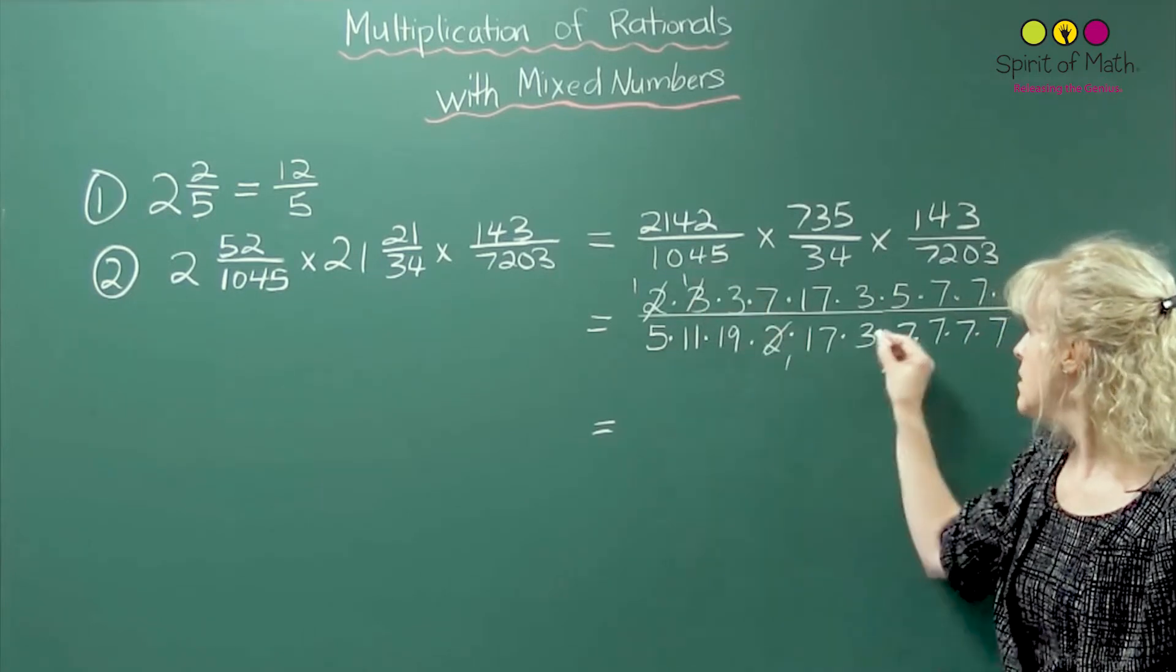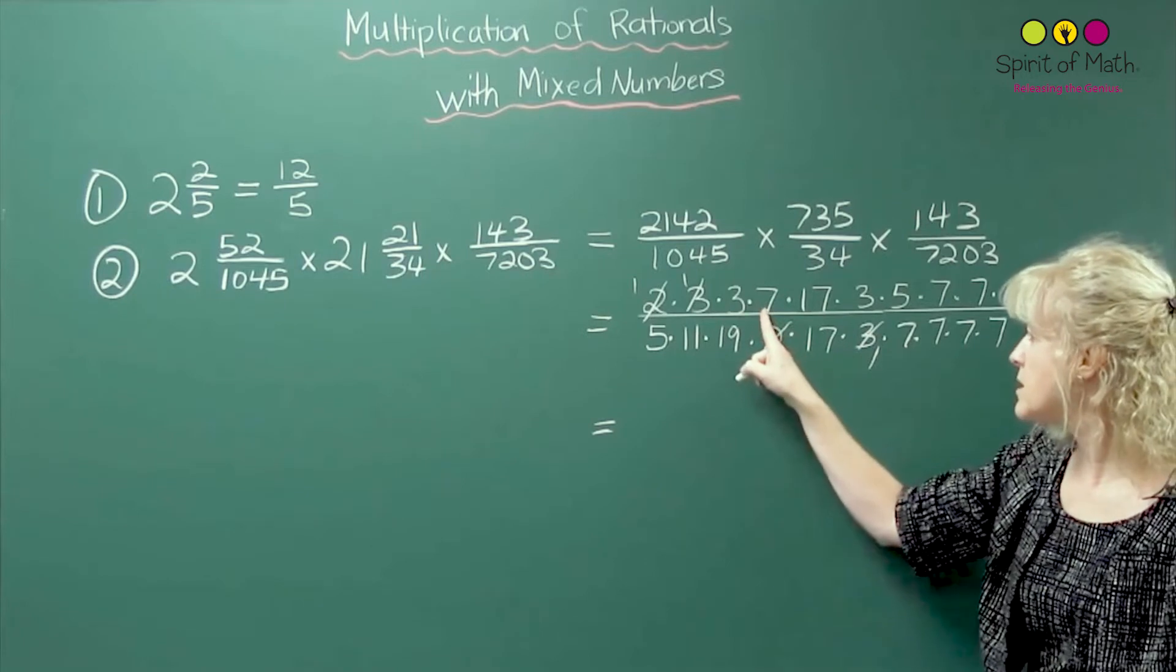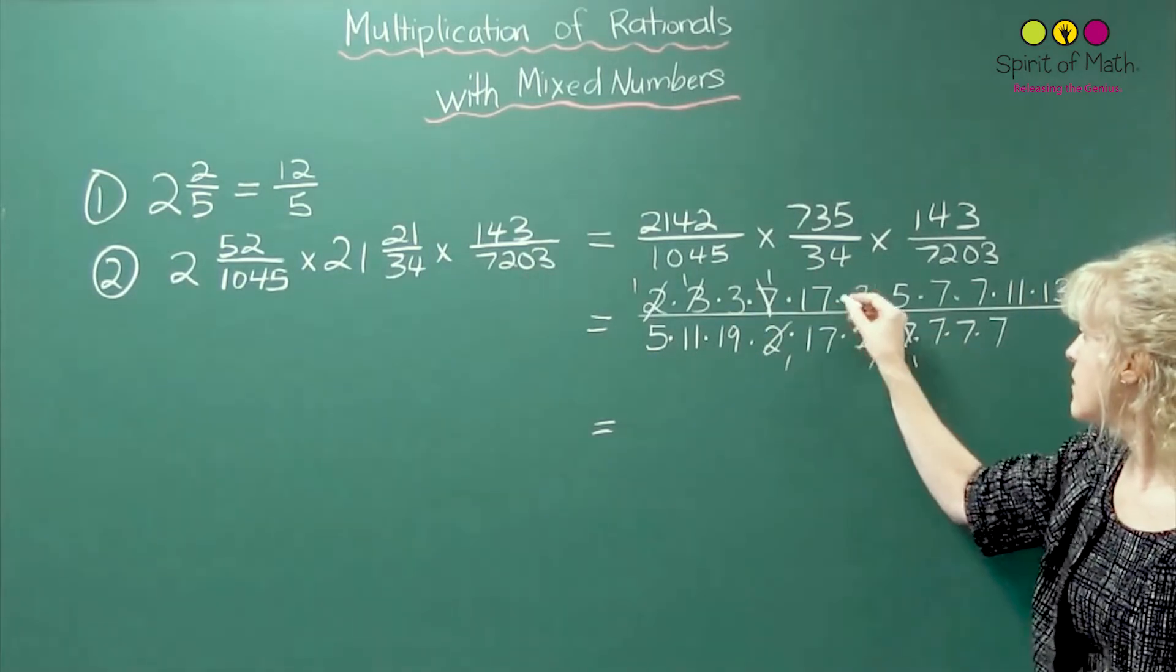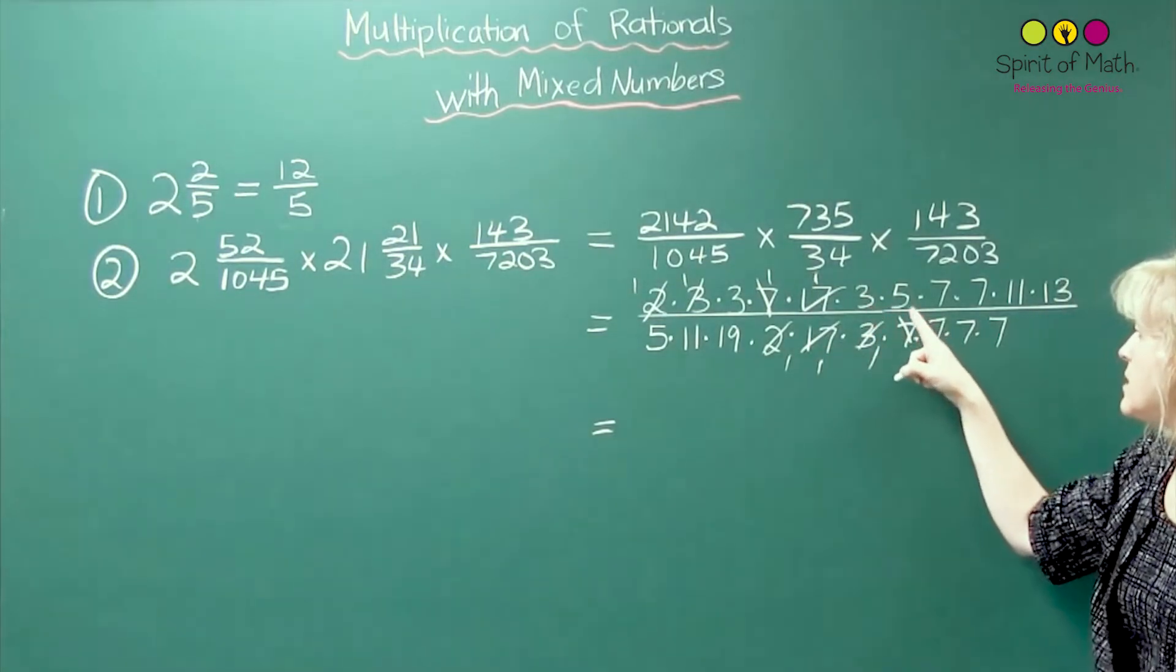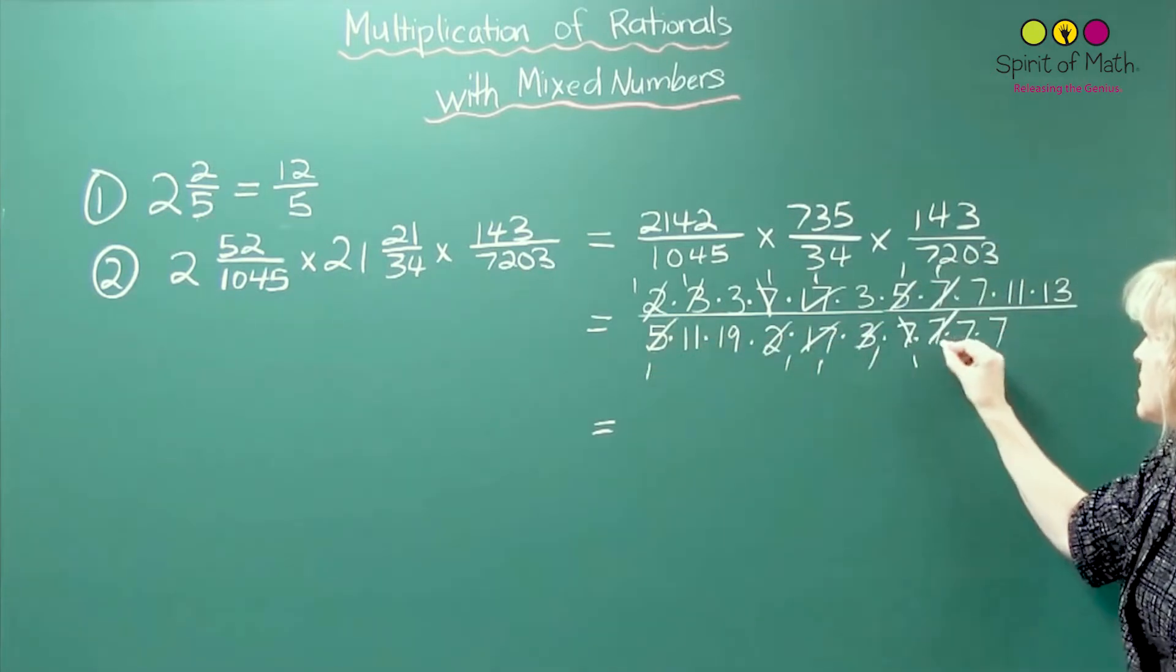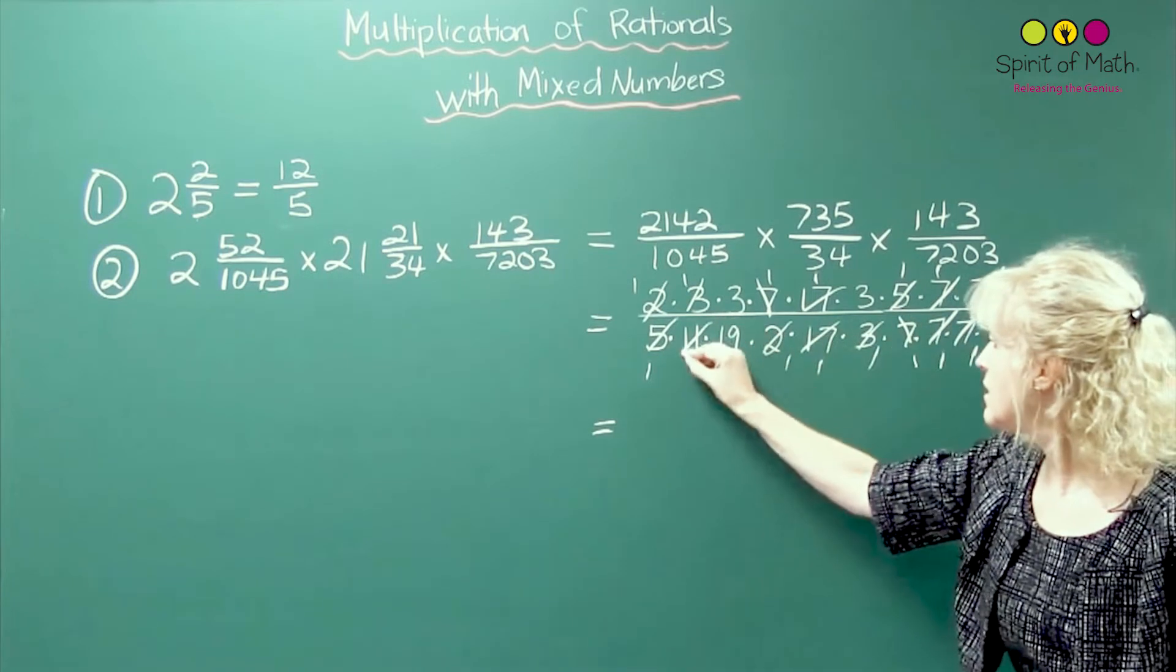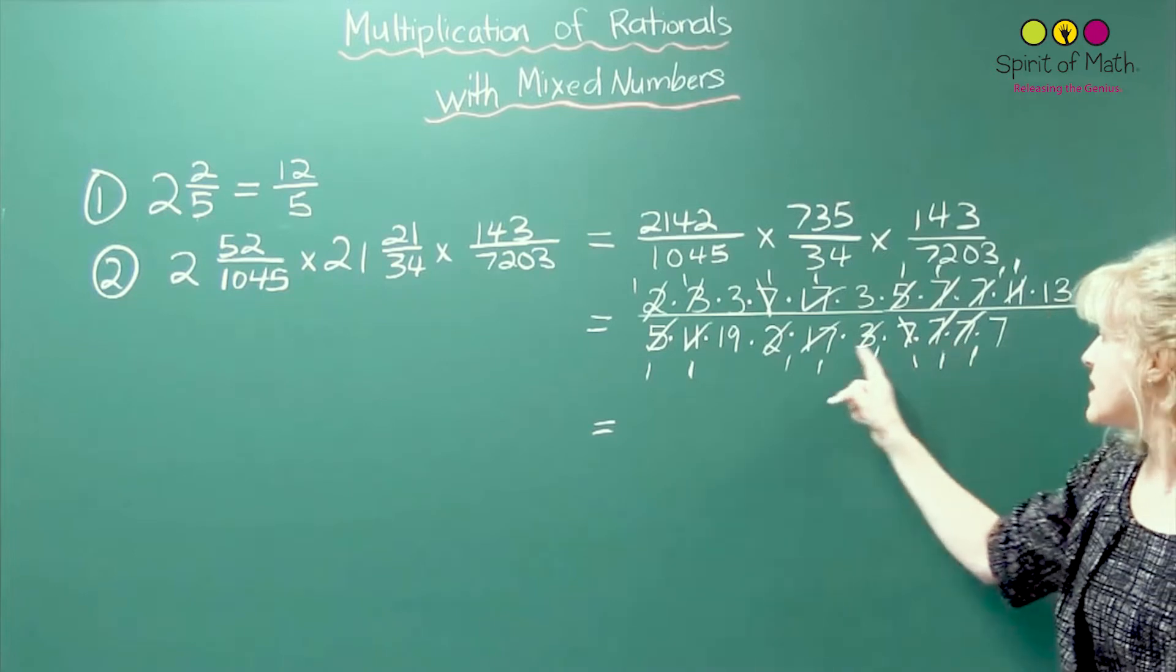So 3, 3, there's no other 3's in the denominator, so I go on to the next number. There's a 7 here and there's a 7 there. A 17 here and a 17, no other 3's. 5, yes, a 7, a 7, an 11, and a 13, no 13's in the denominator.